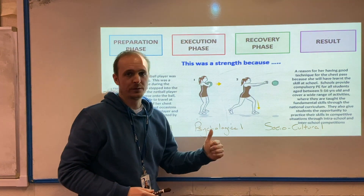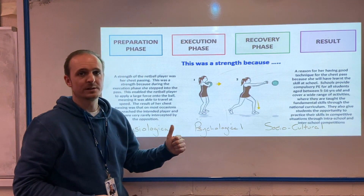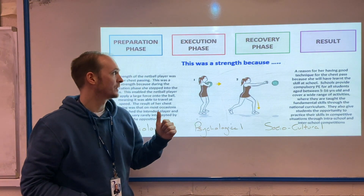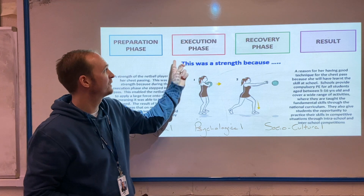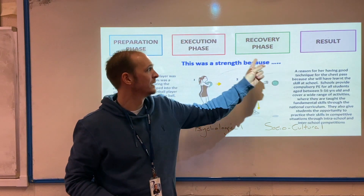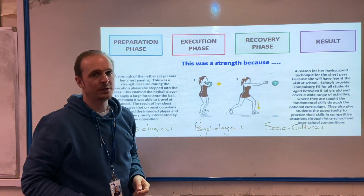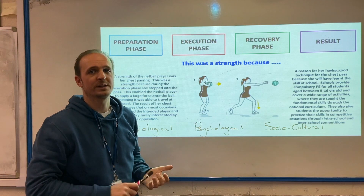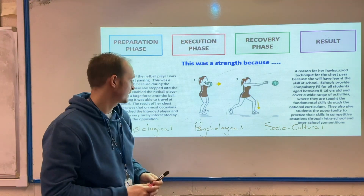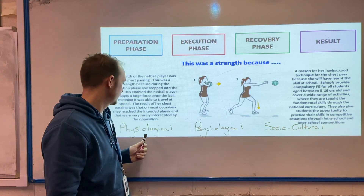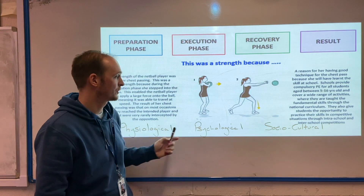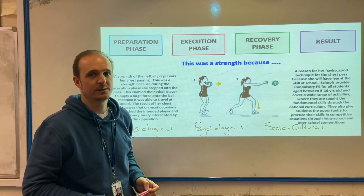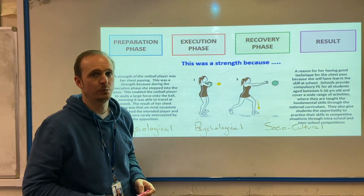So, to summarise: we've got to spot the strength or the weakness and name which skill it is. We've got to talk about and justify which phase it is, mention the effect on performance, and link our theory elements in — psychological, physiological, and sociocultural — and how that has affected the performance.